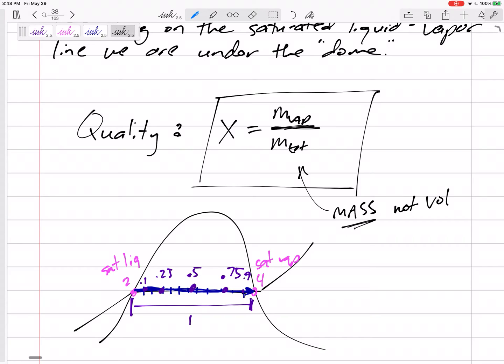Mass, not volume. Sometimes they try to throw you a curveball, and they tell you the vapor, its volume takes up 75%. The liquid's volume only takes up 25%. No, quality is mass. What do you think you might do if they gave you volumes? You might kind of need to use specific volumes to change those to masses. We need mass.